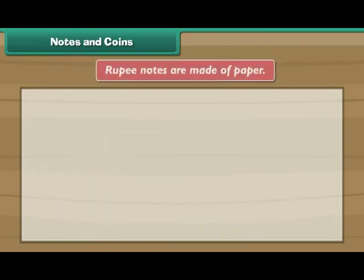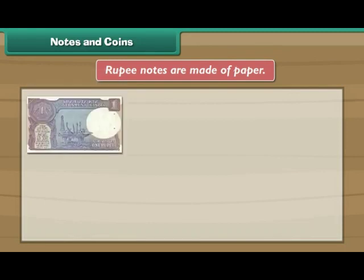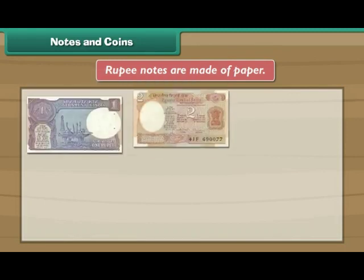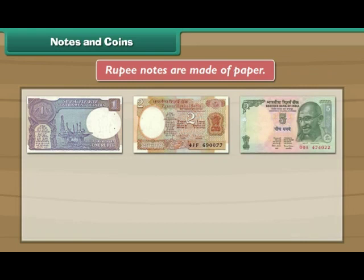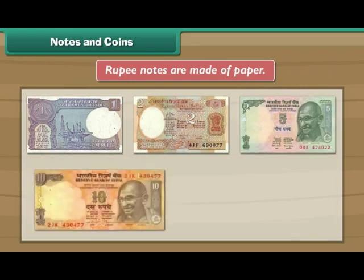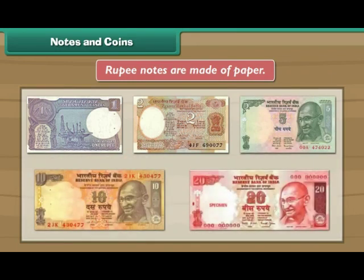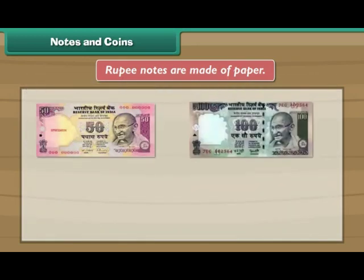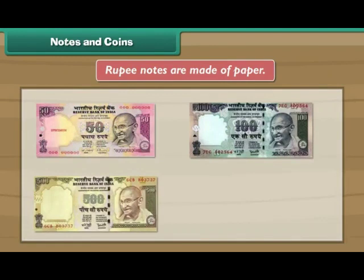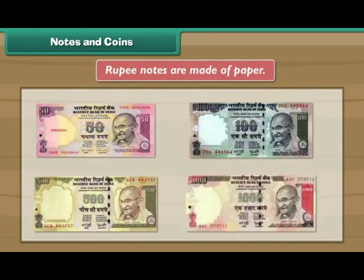Rupee notes are made of paper. There are 1, 2, 5, 10, 20, 50, 100, 500 and 1000 rupee notes.